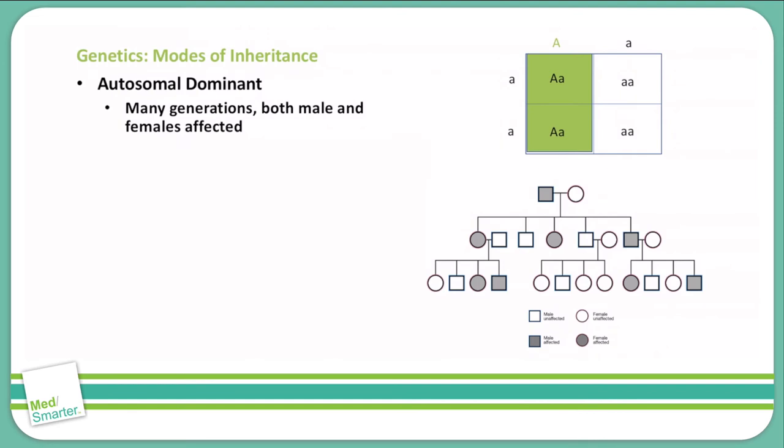Next, we're going to talk about the different types of inheritance with genetic populations. First and foremost, you have autosomal dominant. Autosomal dominant is seen across many generations and populations. You see both males and females are affected with this. This is on the autosome, not a sex chromosome, so it does not have any preferential effect on the male or female population.